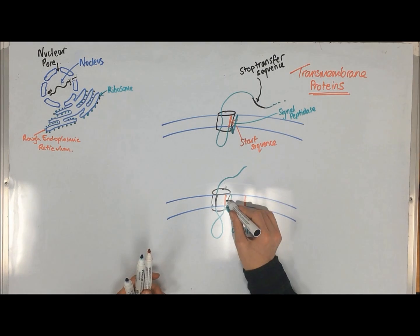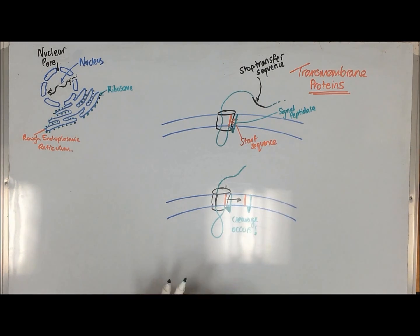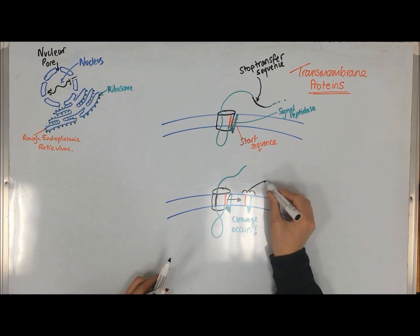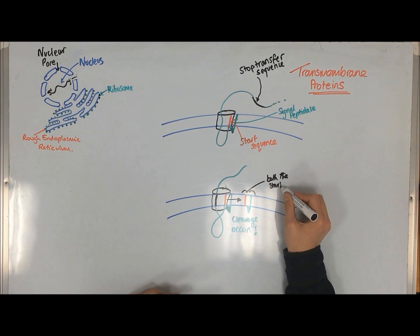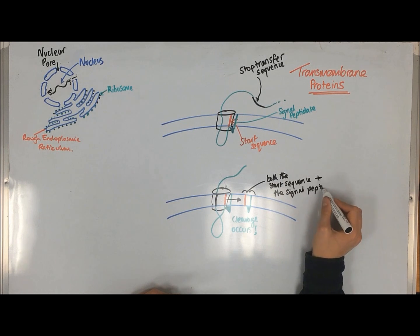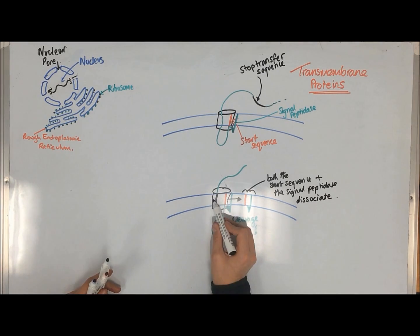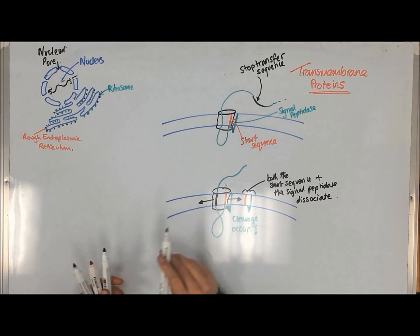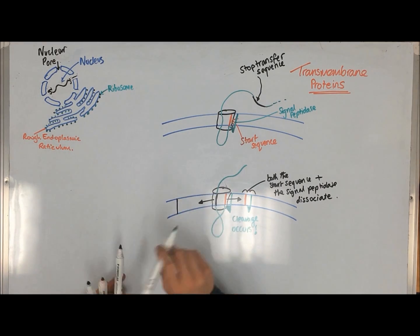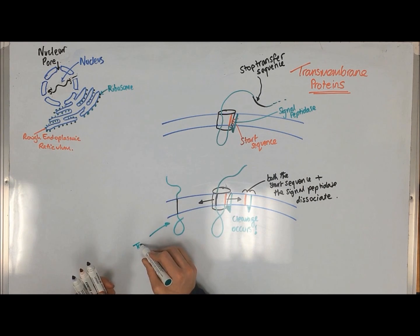More complex transmembrane proteins have numerous start-stop regions and both hydrophobic regions move laterally into the membrane. The start regions initiate translocation and the stop regions initiate the release of the peptide. This allows these peptides to be stitched into the membrane as they are being synthesized. Protein modification and degradation of misfolded proteins also occurs in the RER.